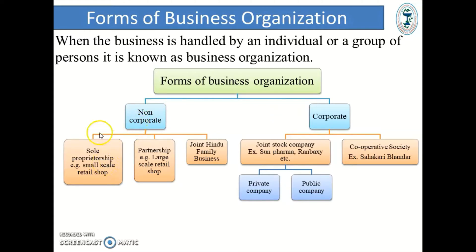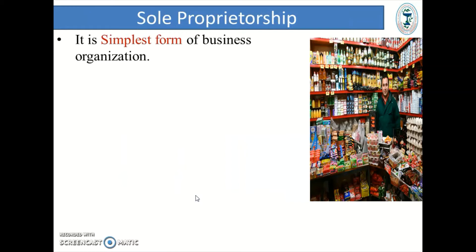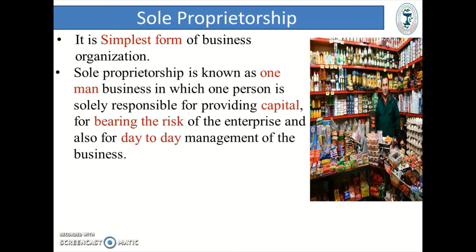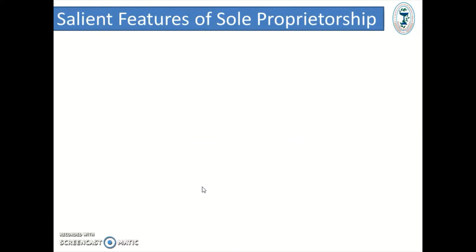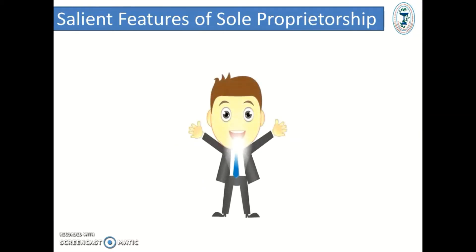We will start with the first type, that is sole proprietorship. It is the simplest form of business organization, also known as a one-man business, in which one person is solely responsible for providing capital, bearing the risk of the enterprise, and day-to-day management of business. When the business is owned by a single person, it is known as sole proprietorship.